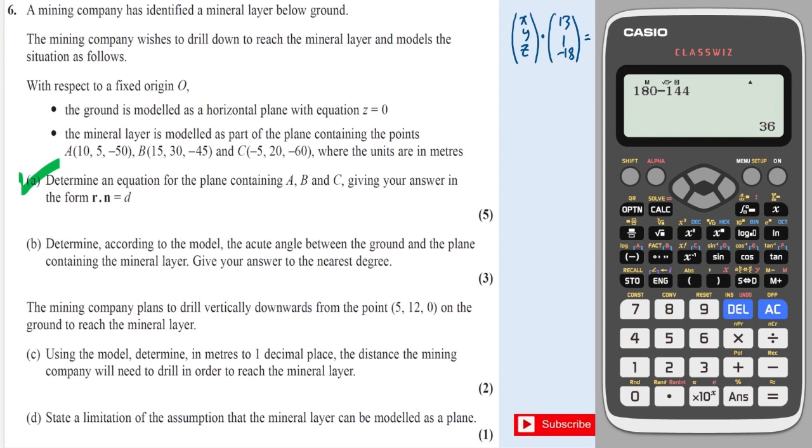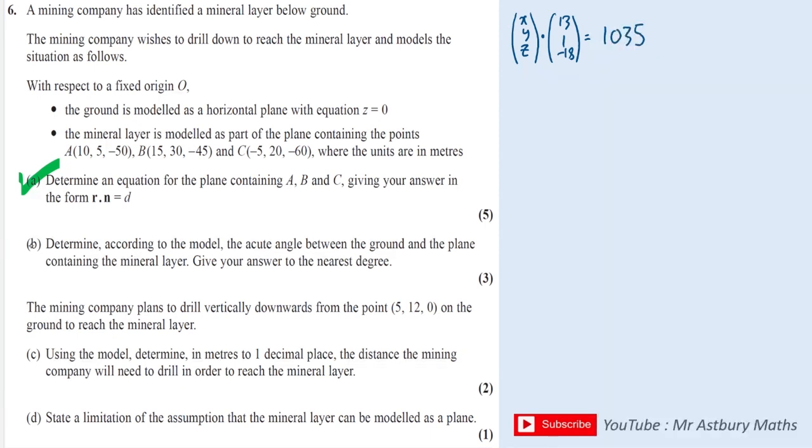Part C asked me to work out the distance that the mining company will need to drill down if it starts from (5, 12, 0), and reaches the mineral layer. So the first thing I'm going to do is just write this equation of a plane in a format I prefer by expanding the scalar product. I'm then going to imagine that this is the ground, and imagine that I've got a point here on the ground, which is (5, 12, 0).